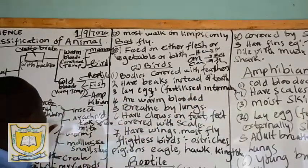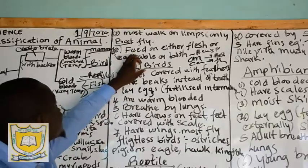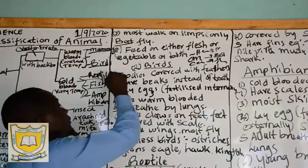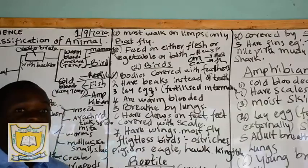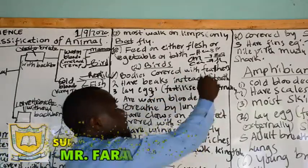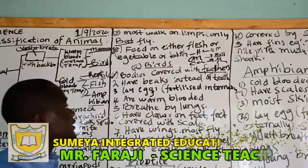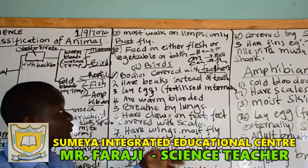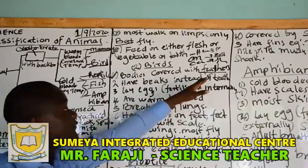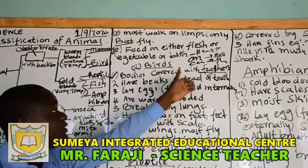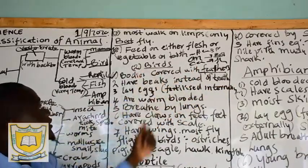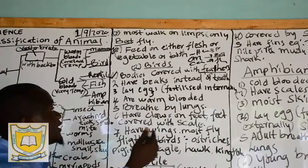Now we move to another animal — birds — still under warm-blooded. Characteristic number one of birds: their bodies are covered with feathers. Unlike mammals, which are covered with hair or fur, birds are covered with feathers. Examples of birds include chicken and geese.